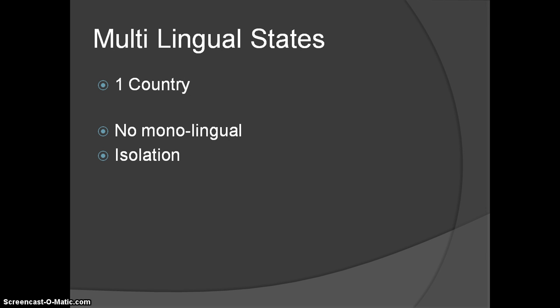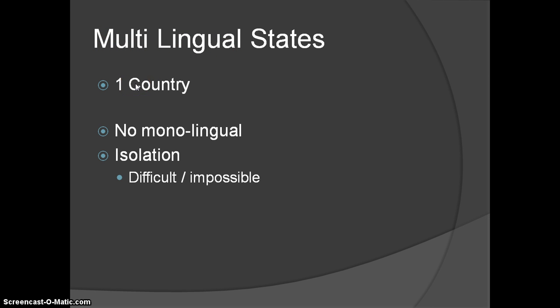The first thing we'll talk about is called multilingual states. If you look at the word multilingual states, it's pretty much what you think — you have the prefix 'multi,' so we're really talking about one country in which you have multiple languages spoken. Now, every country in our world today would be considered a multilingual state, as there is no state where only one language is spoken — that would be a monolingual state.